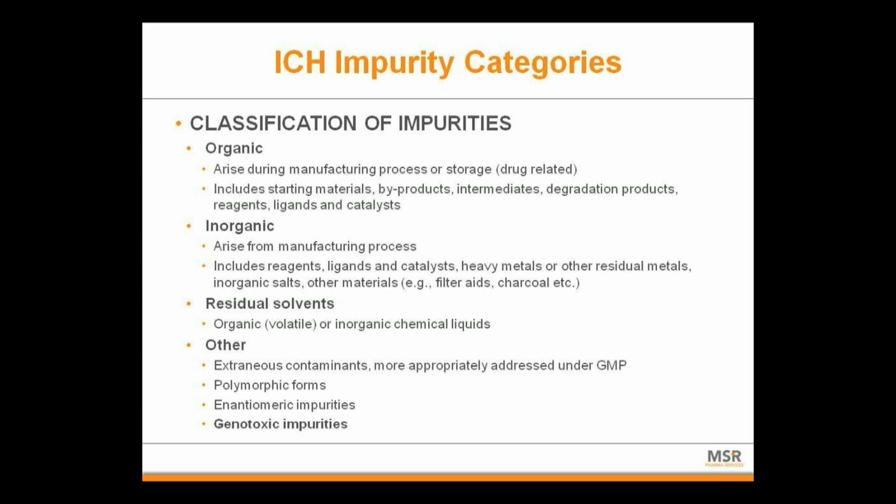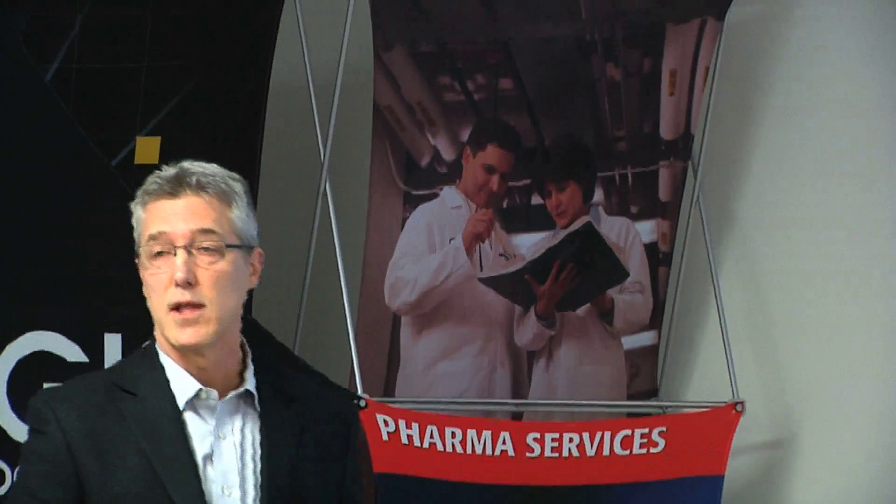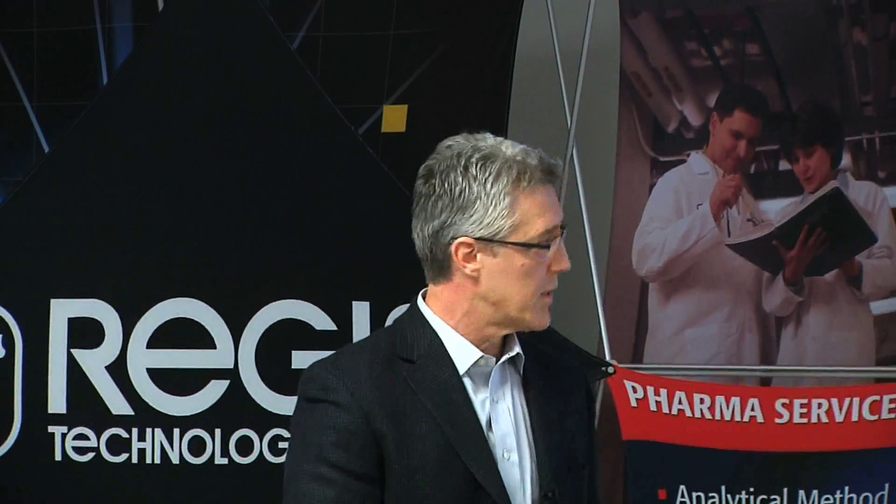The ICH guidelines categorize impurities as organic, inorganic, and residual solvents. They do not cover some of the other genotoxic impurities — the Q3s don't cover those — but there is that draft guidance which I'll discuss. Organics are the larger category of impurities, and most drug-related substances are organic. Inorganic impurities are also covered, and the revised residual solvents guidance has been very helpful for setting limits for solvents typically used in API synthesis.